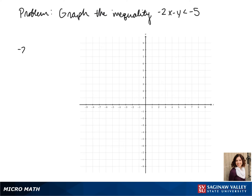First, we'll put our inequality in slope-intercept form. When we add 2x to the other side, we get -y < 2x - 5.